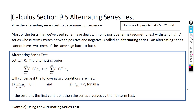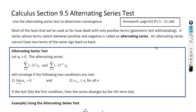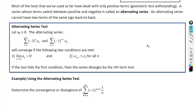All right, ladies and gents, we're back with 9.5, the alternating series test. We talked a little bit about oscillating back when we talked about sines and cosines at infinity — they oscillate between negative 1 and positive 1. Alternating series are very similar in that the function oscillates between different values, and we're going to be using that concept today.